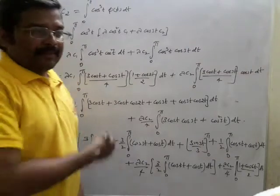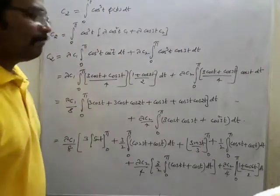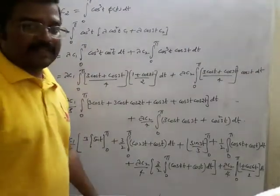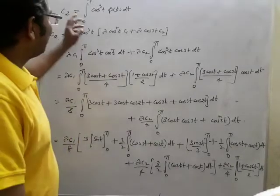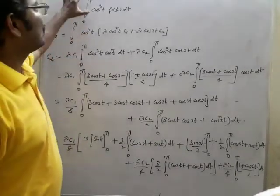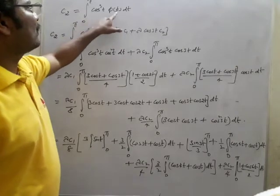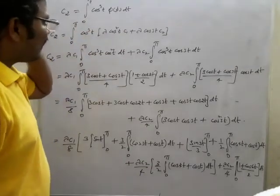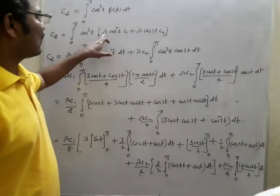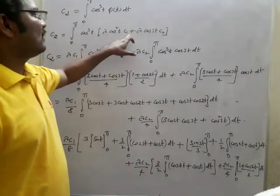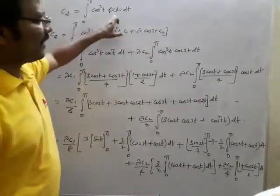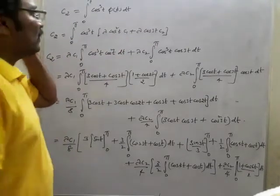Hey students, the remaining part of the previous problem of Hermitian-type equation. We have already found c1; now this is about c2. c2 we have taken as the integral from 0 to π of cos³(φ(t)) dt, and φ(x) value is λ cos²x, with c1λ cos 3x and c2. So because it is φ(t) we have taken t.